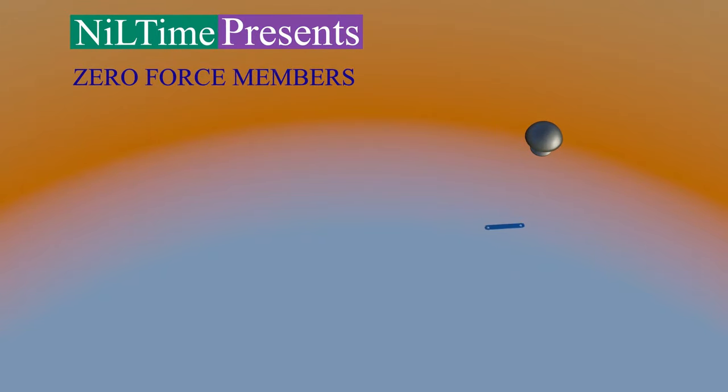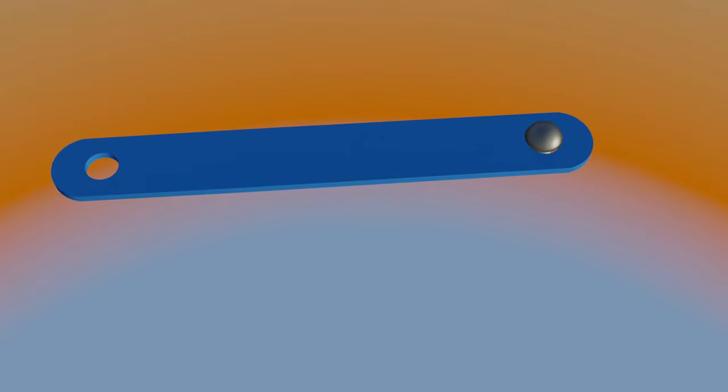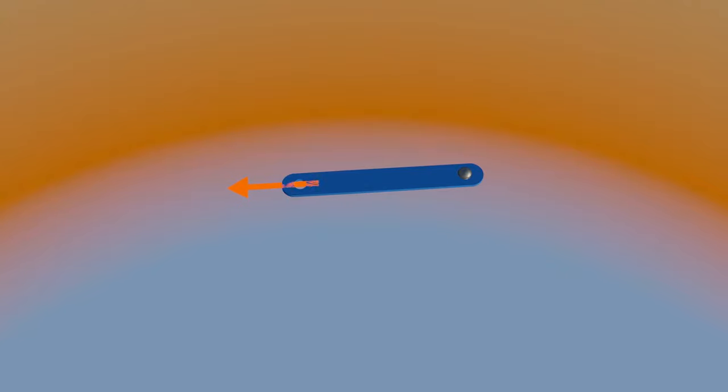Here is a joint and a member of truss connected together. Now, what will happen if you apply a force on this member in x direction?